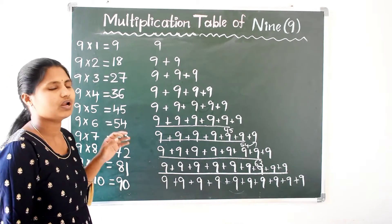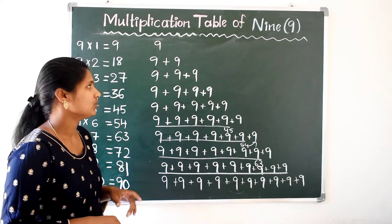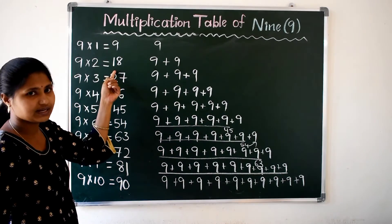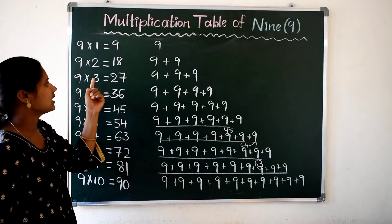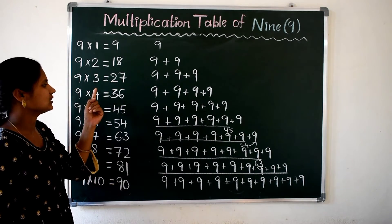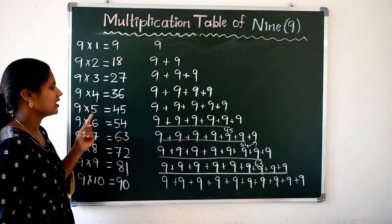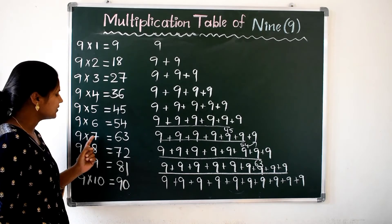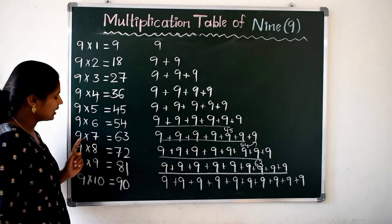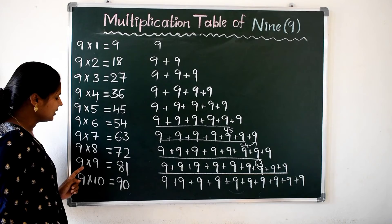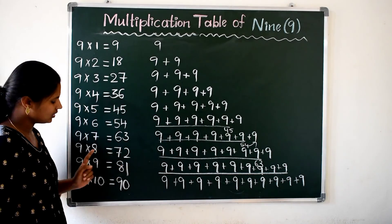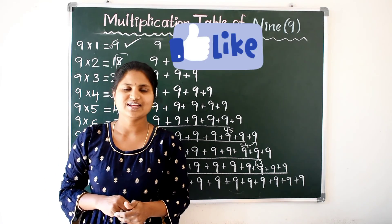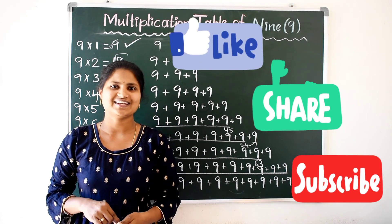So this is the multiplication table of 9. Let us read one more time: 9 1's are 9, 9 2's are 18, 9 3's are 27, 9 4's are 36, 9 5's are 45, 9 6's are 54, 9 7's are 63, 9 8's are 72, 9 9's are 81, 9 10's are 90. Hope you understand this class, children. If you like my class, please like it, share it and subscribe it.